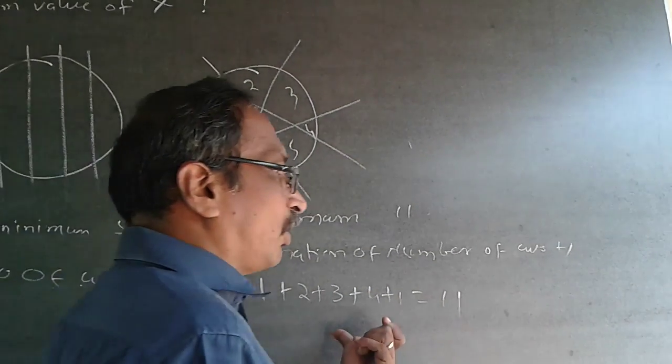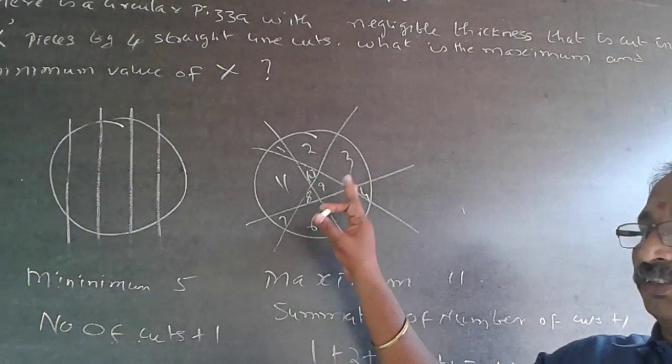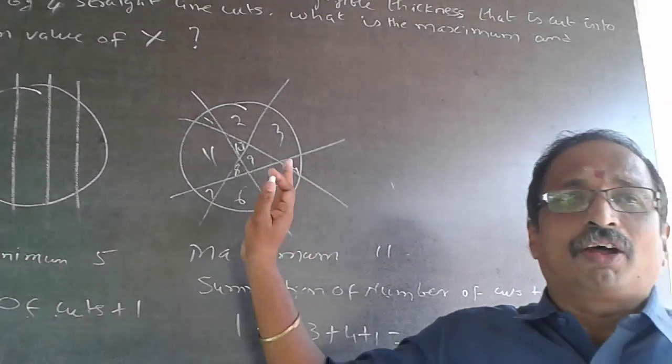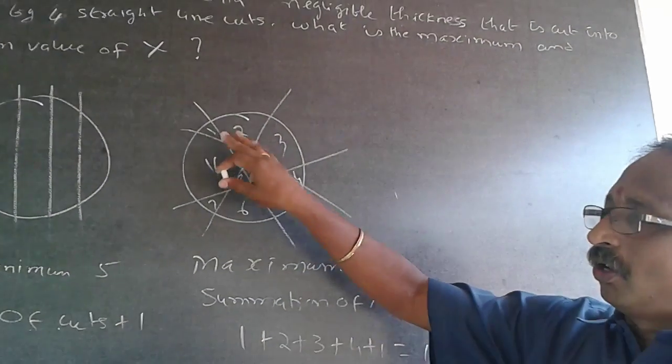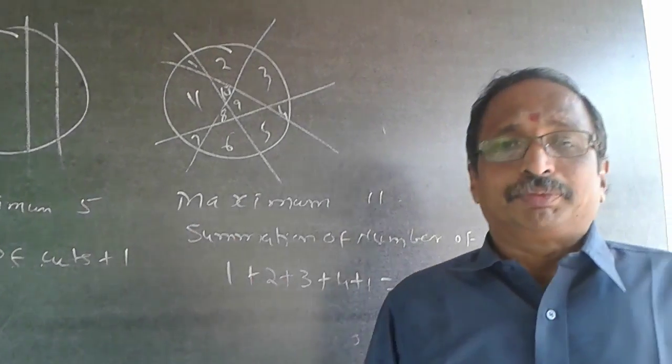Now this rule is applicable only when it is a closed circle like this. It is not applicable for square or rectangle or a cone. So if it is a circle or egg shape, whatever it is, it is applicable. But it is not for any other shapes.